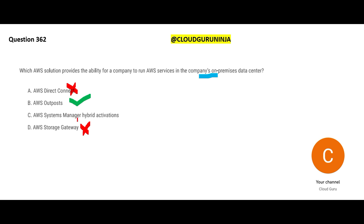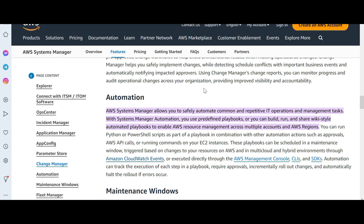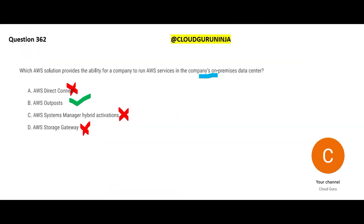Systems Manager is useful for automating repetitive tasks — you can create playbooks, run them, and schedule them. A common use case is automating patch installations and upgrades. However, that is not what this question requires, so Systems Manager is wrong. The final answer is Outpost Family, which lets you run AWS infrastructure and services on-premises.